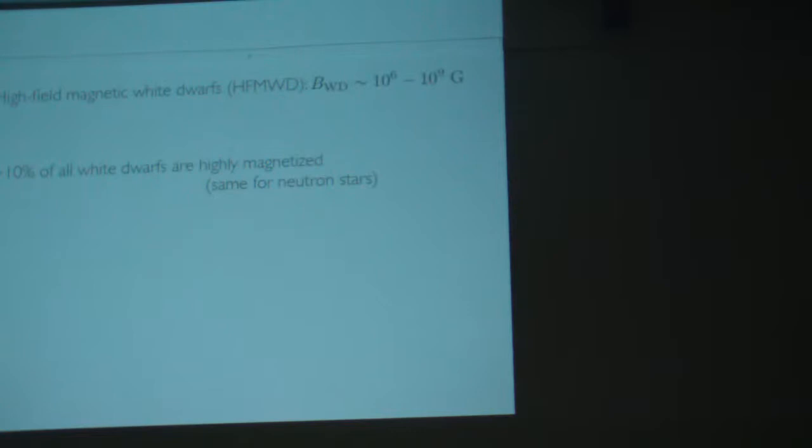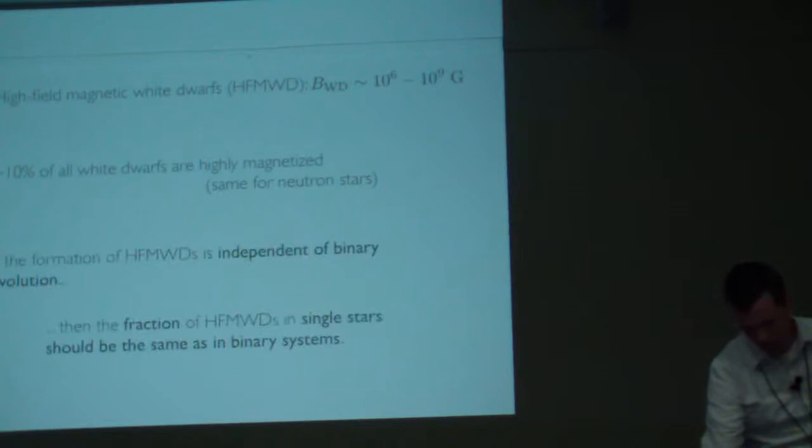It's the same percentage for neutron stars. Ten percent of neutron stars are magnetars with measured field strengths of 10^14 to 10^15 gauss fields. These are enormously magnetized compact objects.